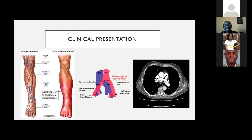Remember there are other things that can cause leg swelling. When thinking of DVT, this is a patient who has unilateral lower limb swelling, or if bilateral, one side seems more swollen, or they have pain. For patients with involvement of vessels distal to the popliteal vein, we call that distal DVT. Involvement of more proximal vessels — from the popliteal, femoral, and iliacs — is called proximal DVT, and those are more prone to pulmonary thromboembolism.